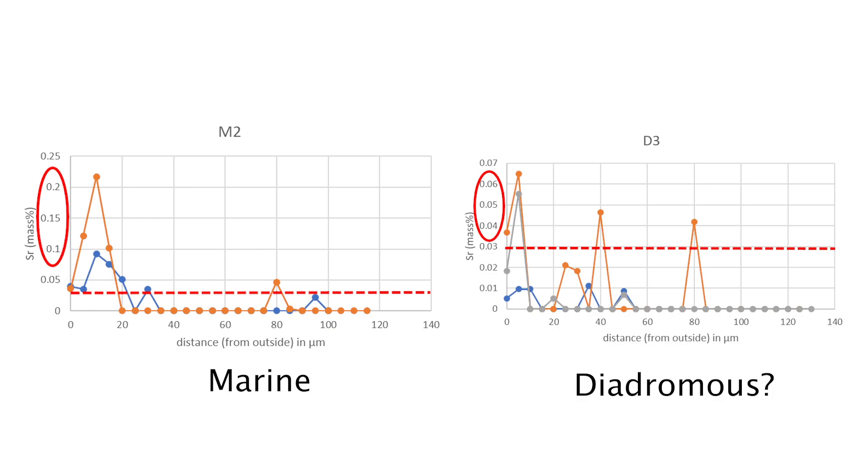This suggests that the marine samples inhabited environments characterized by higher salinity, which means ocean water, during early growth stages. The proposed diadromous samples inhabited environments with lower salinity, which means fresh water, during the early growth.